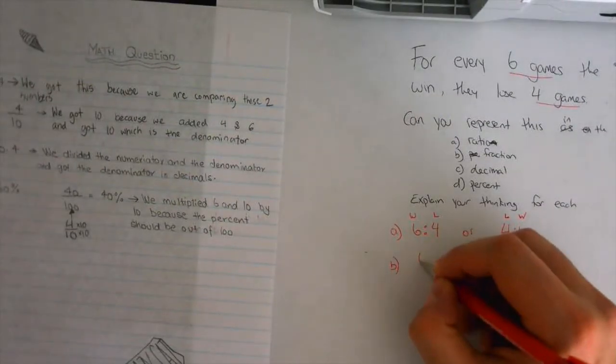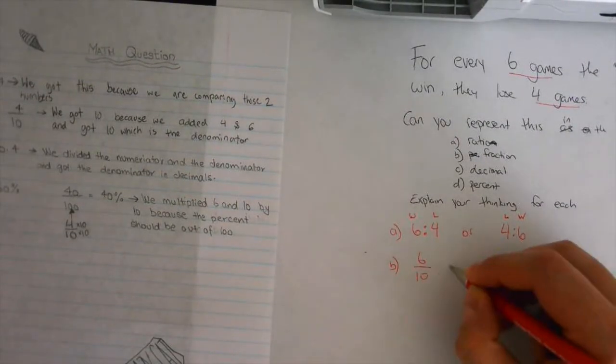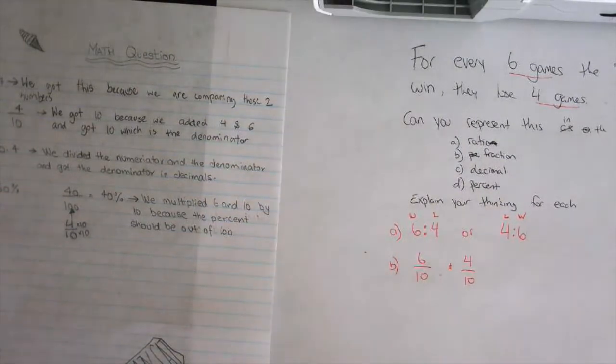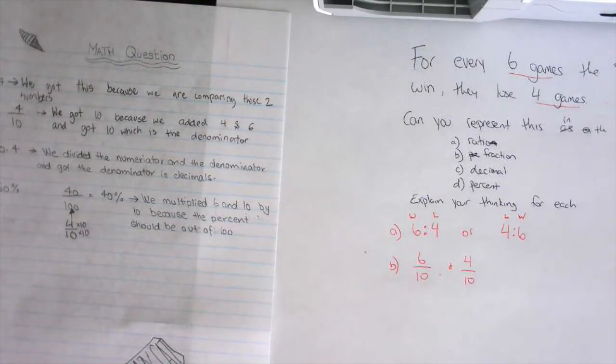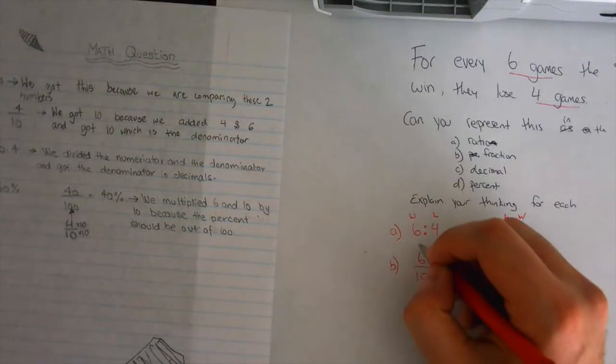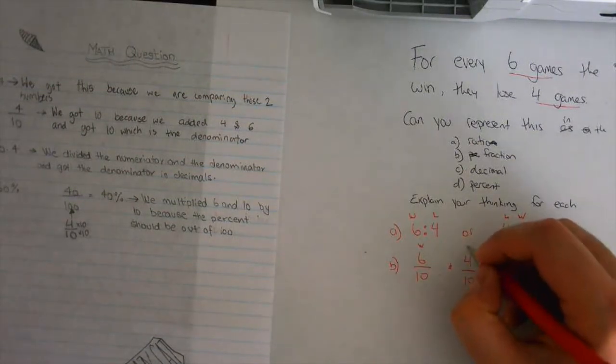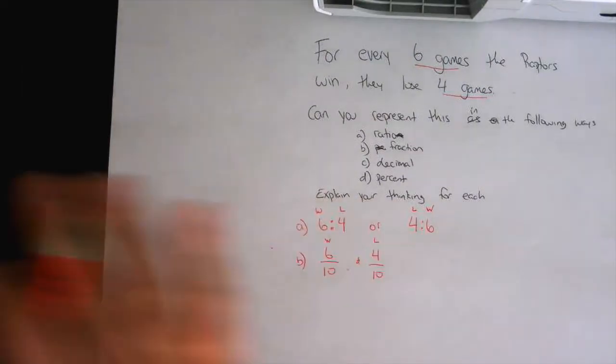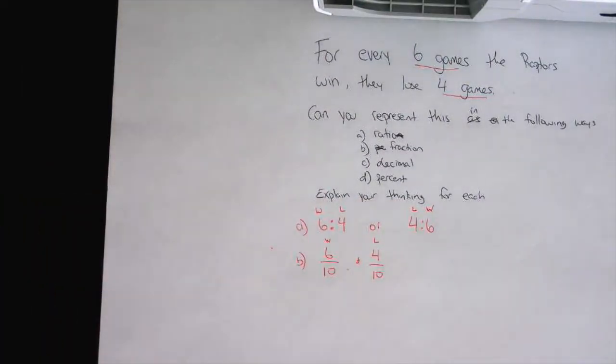Beautiful. So let's capture that here. You said six over ten and four over ten. So the six over ten represents how many wins, and this is the losses. Now, why is the denominator ten? We understand why the denominator is ten.